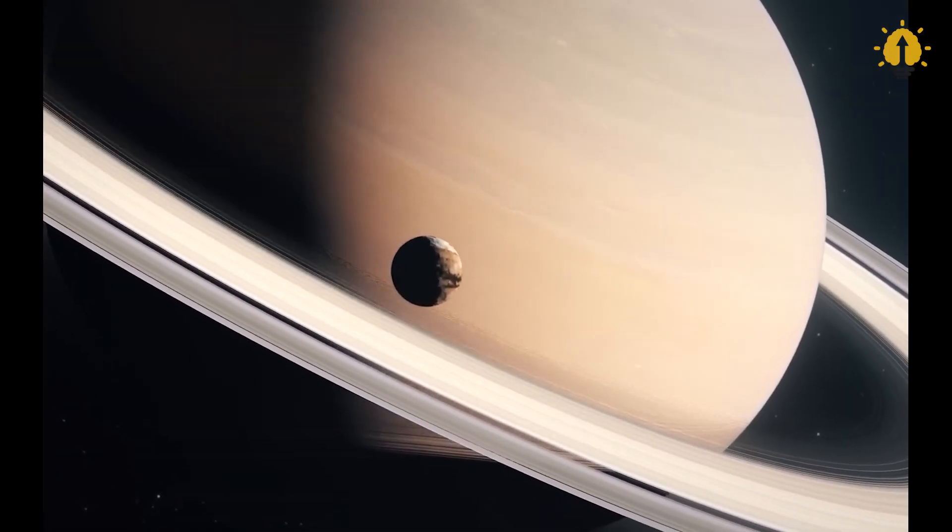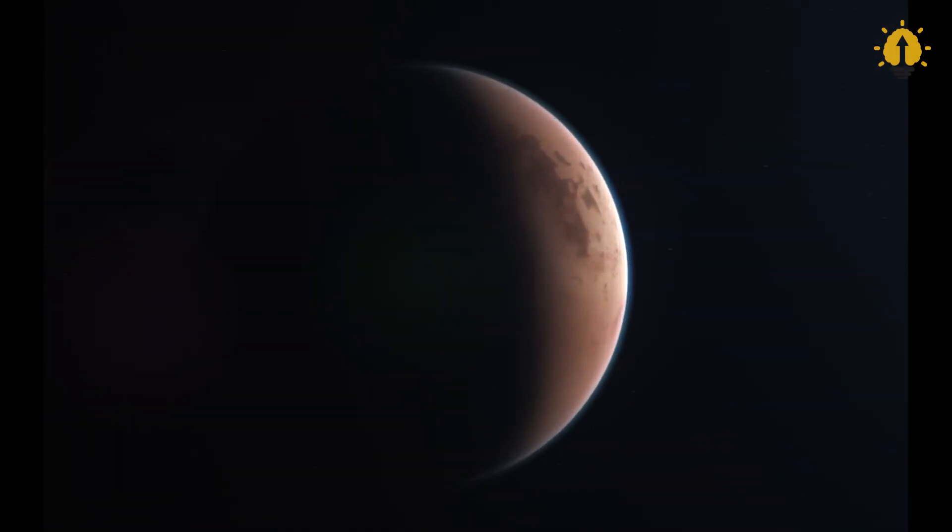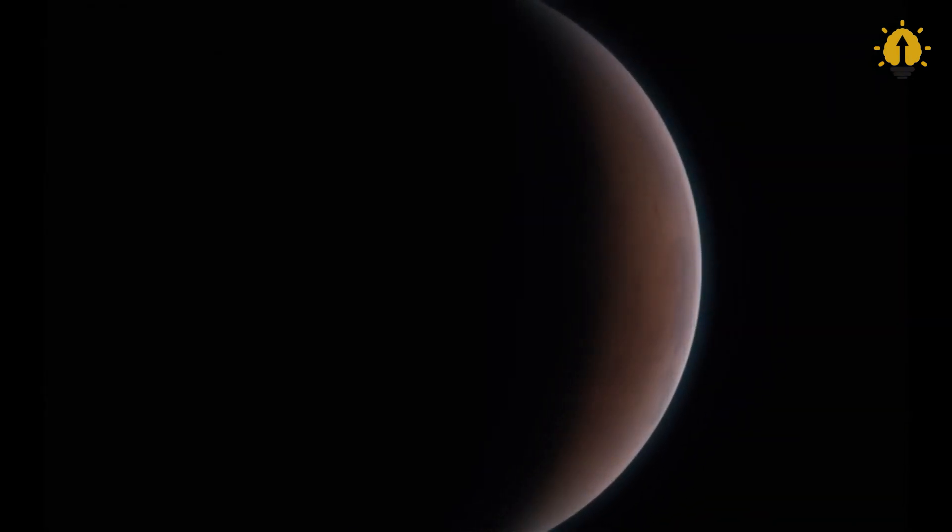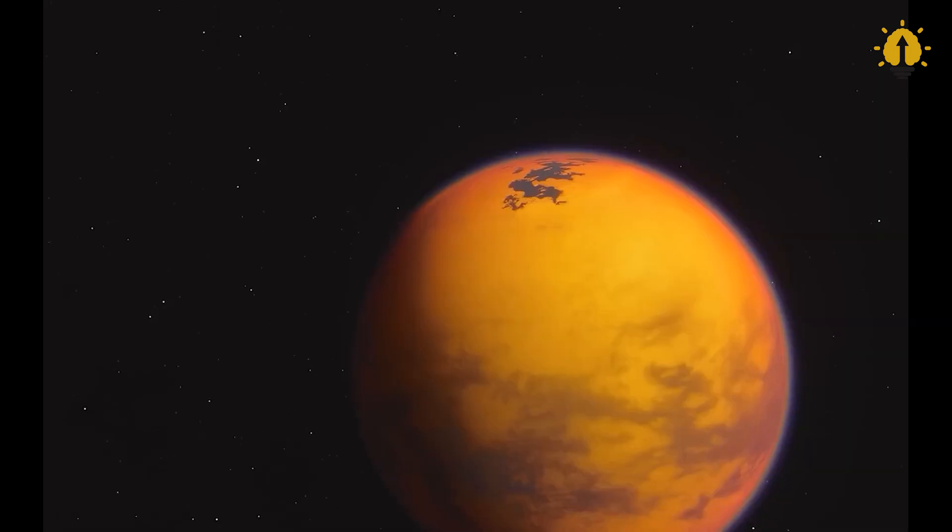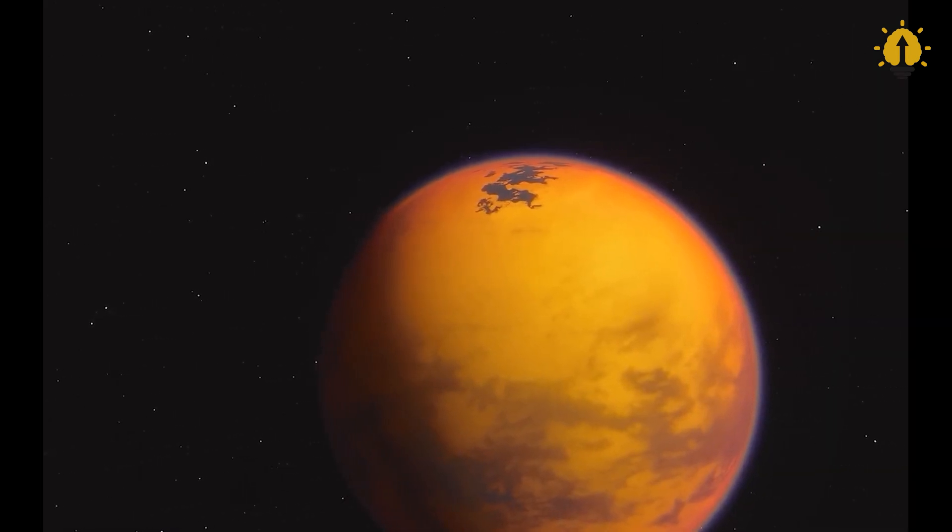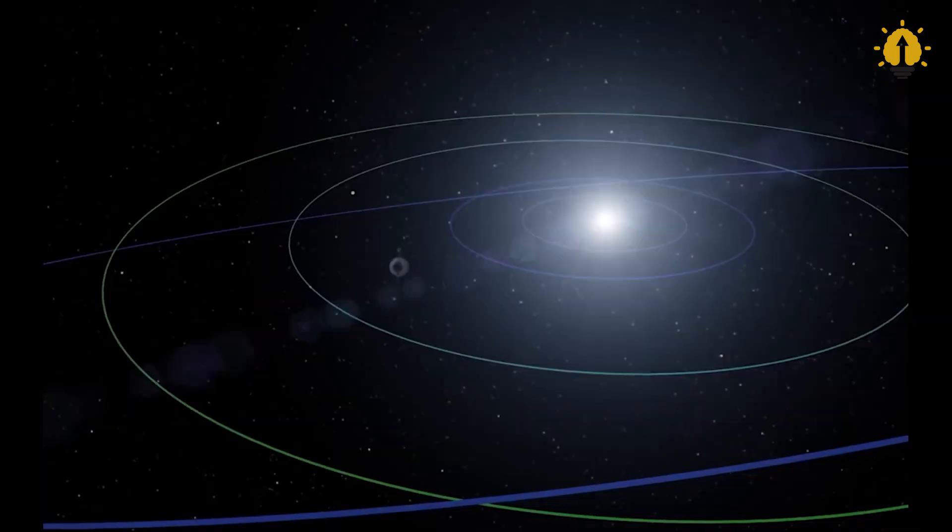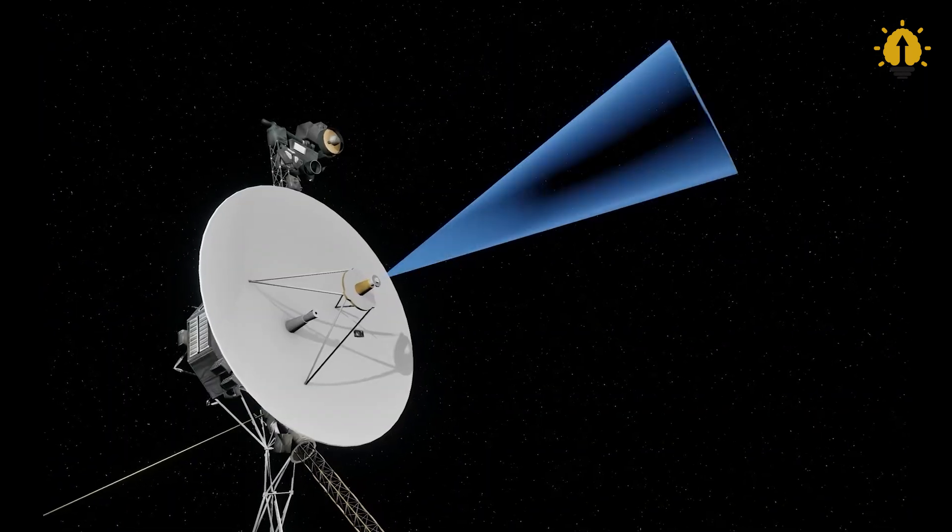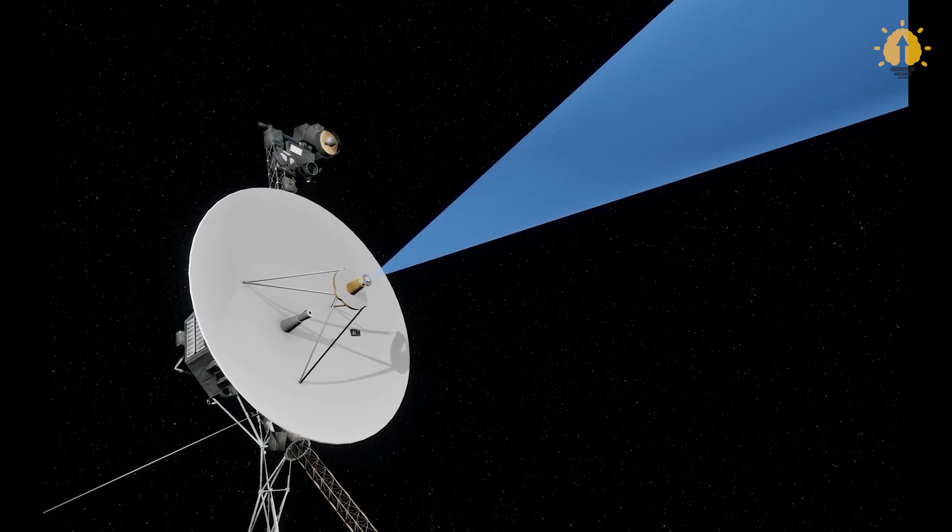Voyager 1's path took it close to Saturn's moon, Titan, which is cloaked in an orange, hazy atmosphere. This moon's mysteries piqued scientists' interest, leading to further studies of its complex chemistry. Voyager 1 then turned northward, departing from the plane of the planets, and began its journey beyond the realm of our solar system.